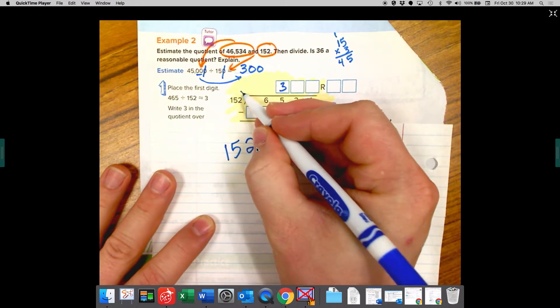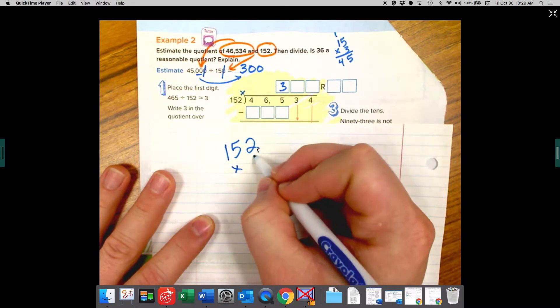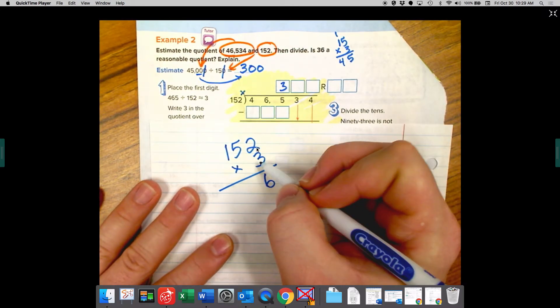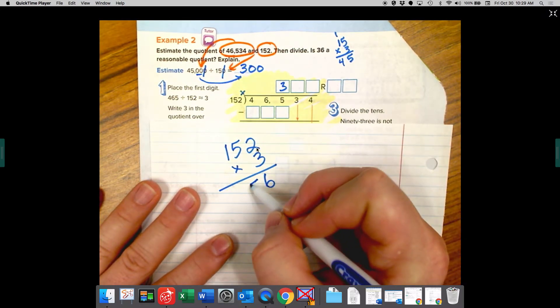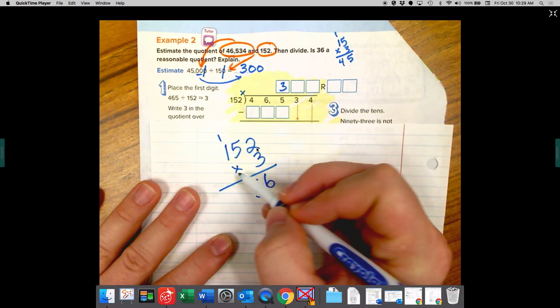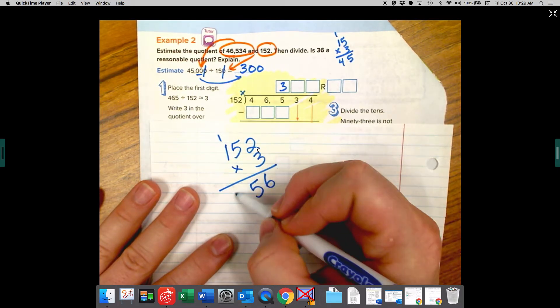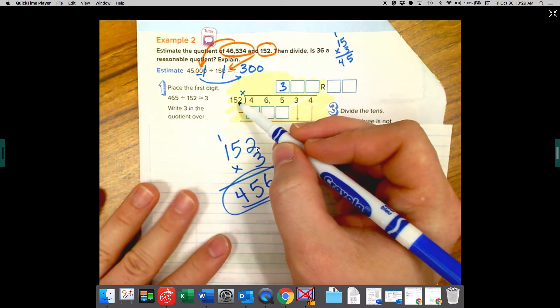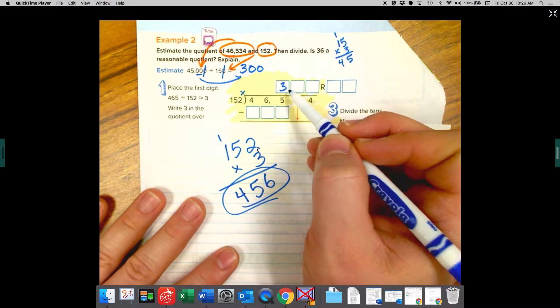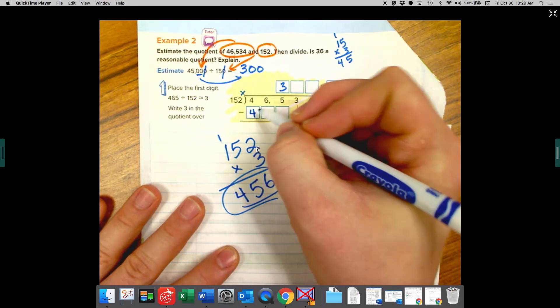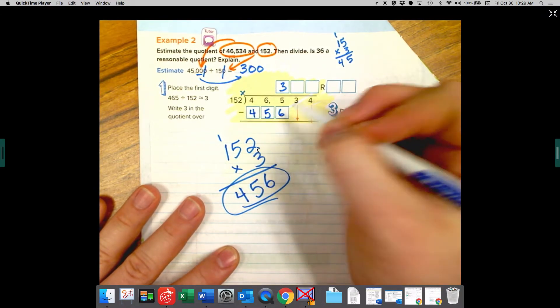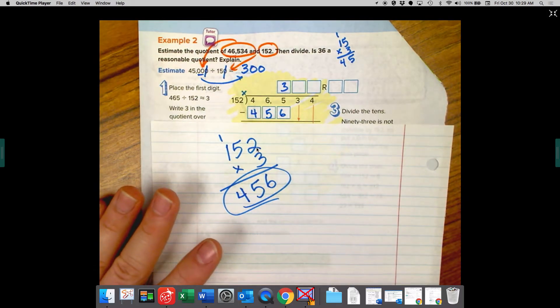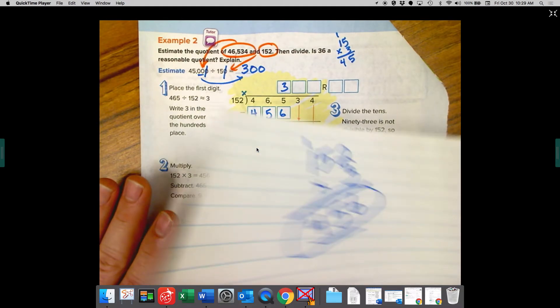So let me do it on scrap paper. 152 times three. This is easy to figure out. I got a lot more room. Three times two is six. Three times five is 15. Carry the one. Three times one is three plus one more is four. So my answer is 456. So if I did 152 times three, I'm going to subtract 456. And I think we were really close. If we would have done times four, it would have been too much. And we would have to adjust it and move back down.